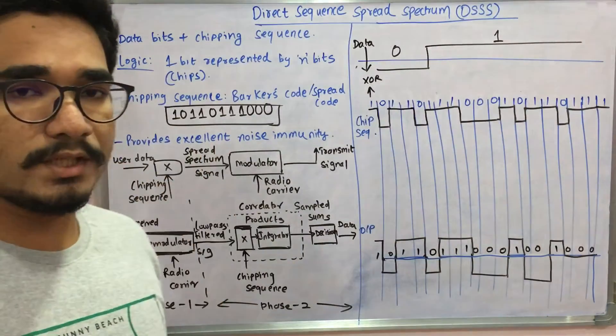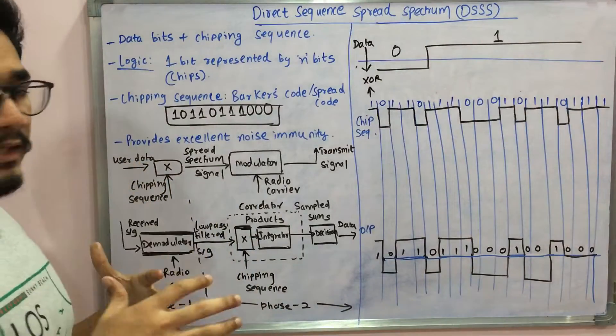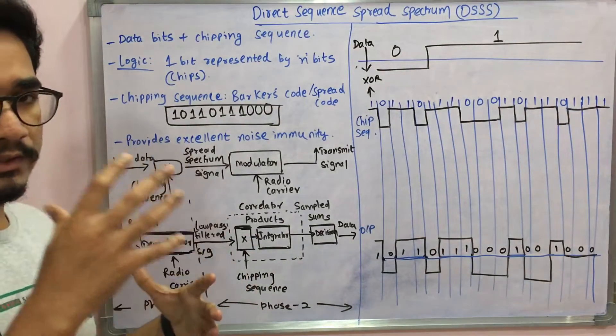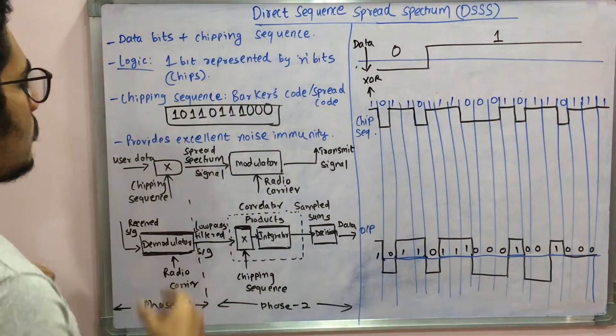We have the modulation step as well as the demodulation step. The modulation step is very easy. First you have the user data which consists of the database, then you apply the chipping sequence.